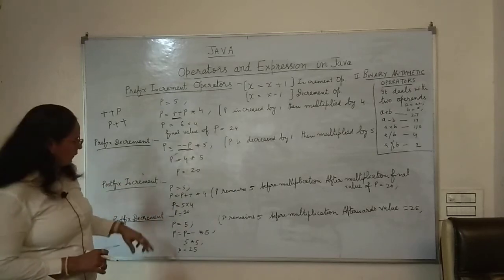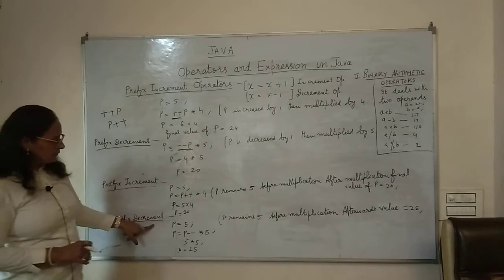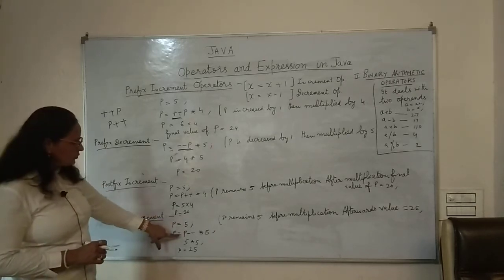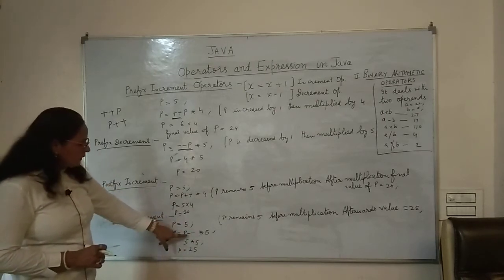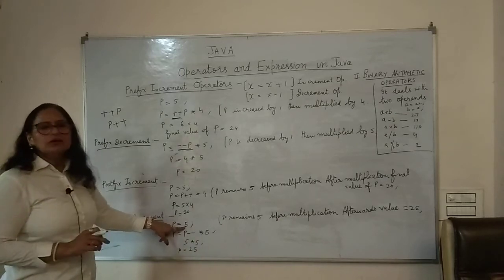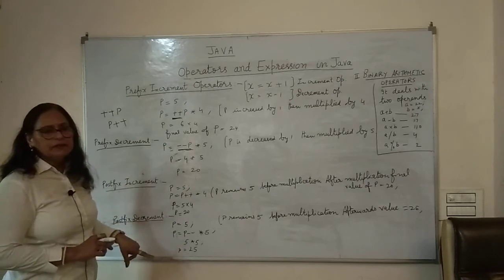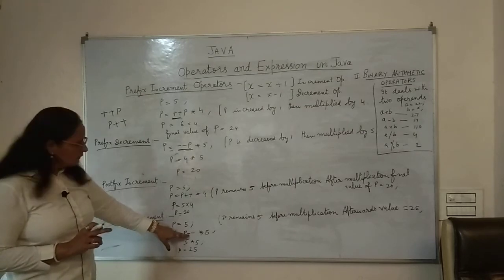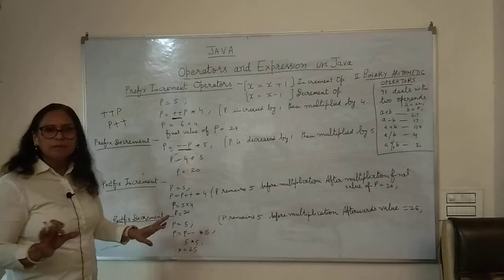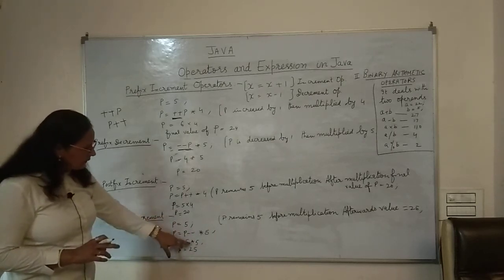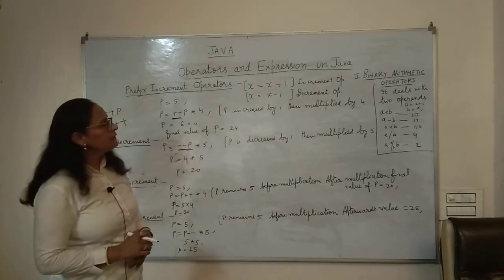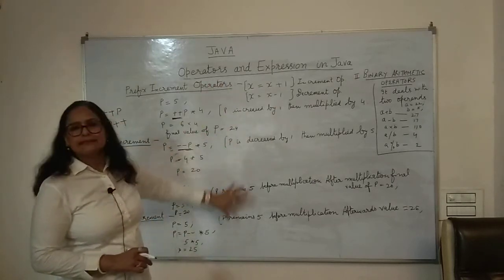Similarly, for postfix decrement: P is equal to 5. P = P-- * 5: P's value will be 5 — it will not deduct 1 before the multiplication because it is postfix decrement. So P-- * 5 means P's earlier value of 5 is used: 5 * 5 = 25. Only later will 1 be deducted from the result.